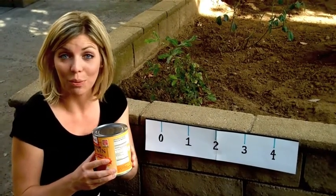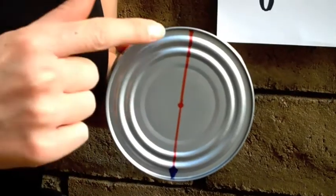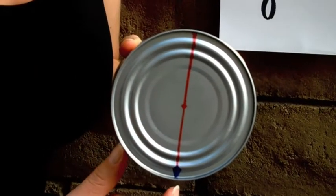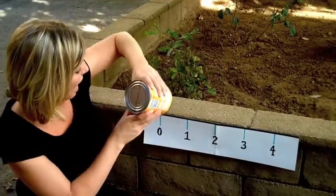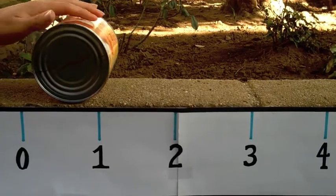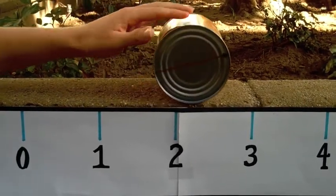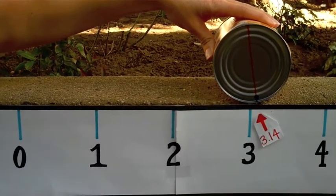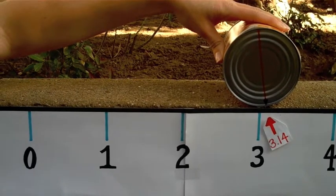Let's use this can to illustrate the point. On the bottom of the can, I've drawn a red line to represent the diameter. The blue diamond is our marker. I'll set the can beginning on zero. When I roll the can one full rotation, you'll see that it surpasses the 3 and lands on 3.14. This works with every single circle.